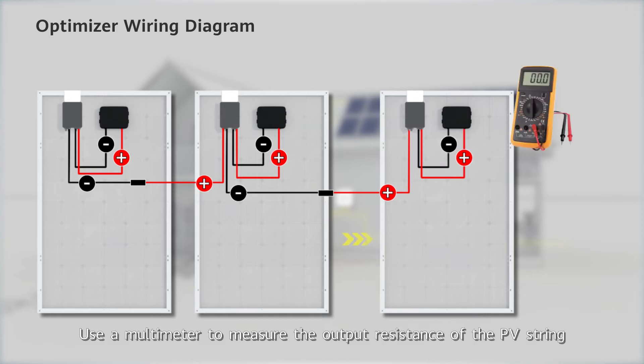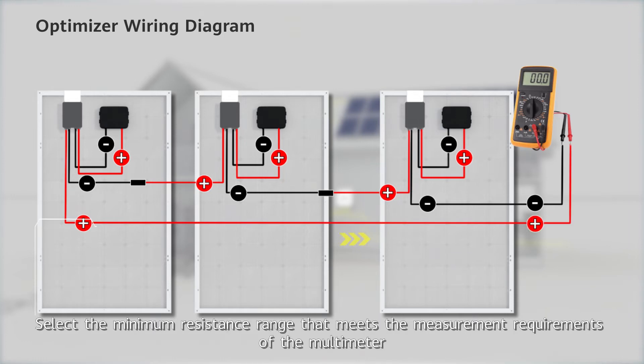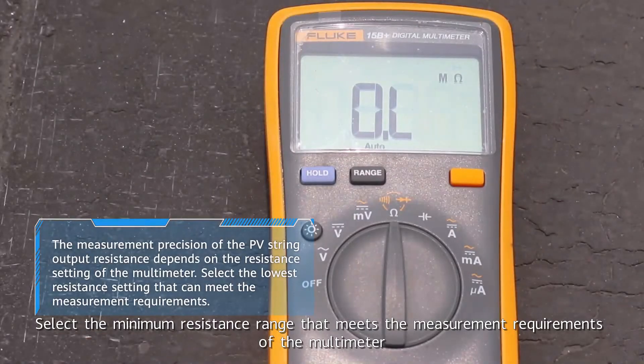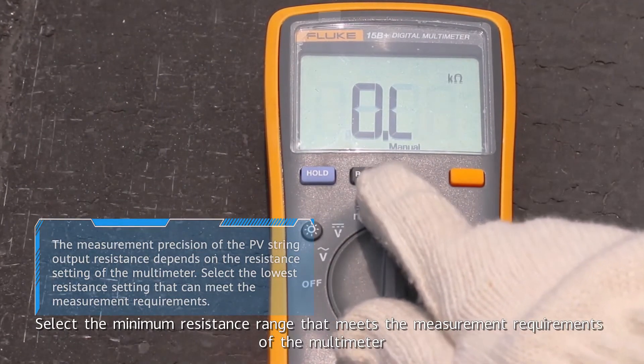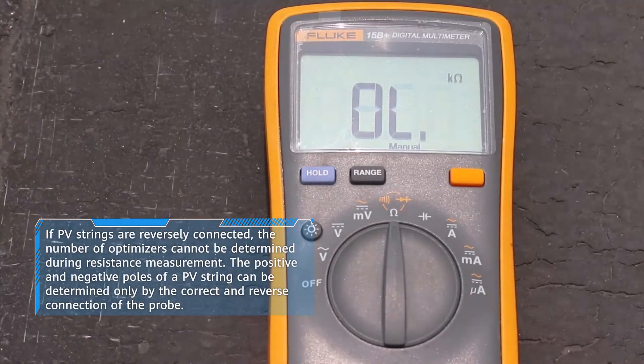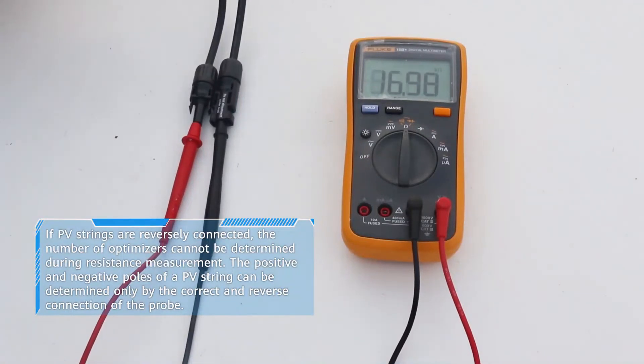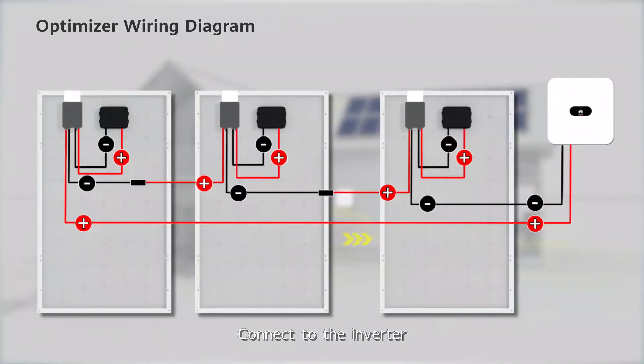Use a multimeter to measure the output resistance of the PV string. Select the minimum resistance range that meets the measurement requirements of the multimeter. Connect to the inverter.